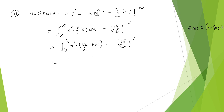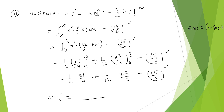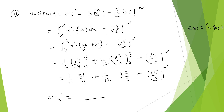Evaluating: (1/6)(81/4) + (1/12)(27/3) − (15/8)². That gives 81/24 + 27/36 − 225/64. Simplifying these terms and subtracting (15/8)² gives σx², the variance. This is how we calculate the k value, mean value, and variance. Thank you, see you soon.